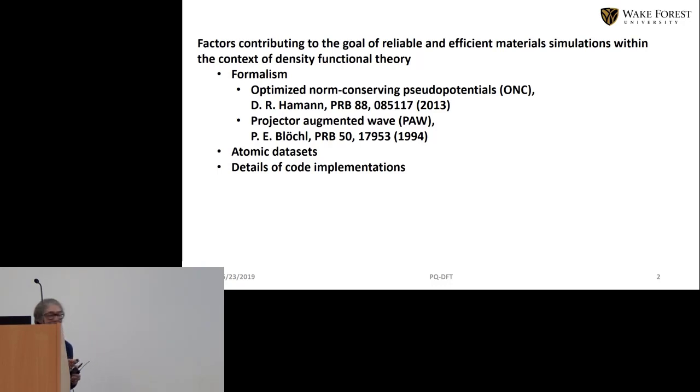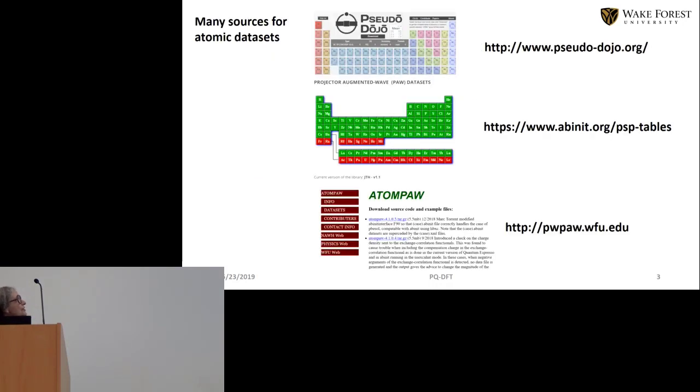So the data sets come from many places. As you know we used the norm conserving pseudopotentials available on the pseudo dojo. I guess we're going to hear about that later. From the AVIDIT website the JTH set developed by Francois Jollet is available and we do share some from our Adam PAW website although it's not very extensive.